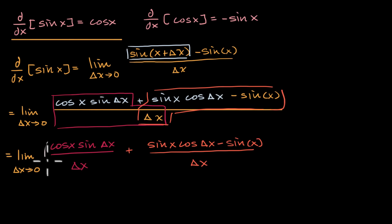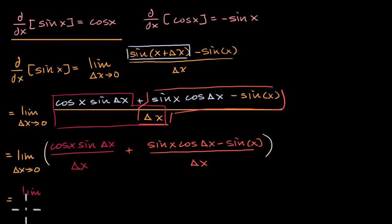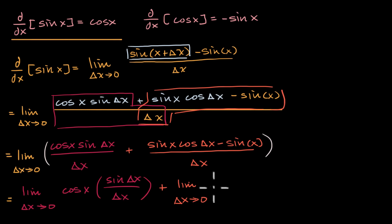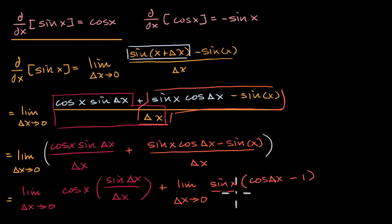And remember, I'm taking the limit of this entire expression. The limit of a sum is equal to the sum of the limits. So this is going to be equal to the limit as delta x approaches zero of cosine of x times sine of delta x over delta x, plus the limit as delta x approaches zero — I can factor out a sine of x — times sine of x, and I'll be left with cosine of delta x minus one, all of that over delta x.